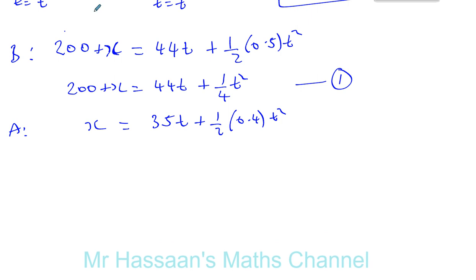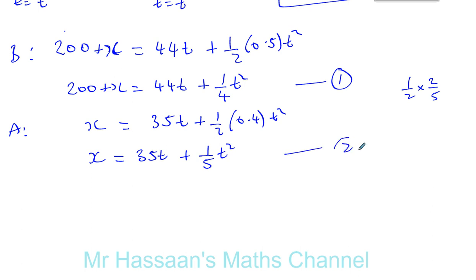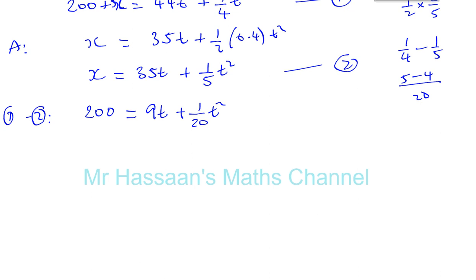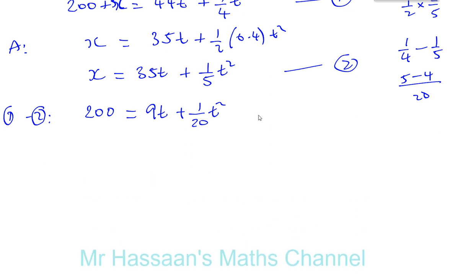Solving simultaneously: subtract equation 2 from equation 1 to eliminate X. We get 200 = 44T − 35T + ¼T² − ⅕T², which gives 200 = 9T + (1/20)T². Multiplying both sides by 20 to clear fractions: 4000 = 180T + T². Rearranging: T² + 180T − 4000 = 0. We end up with a quadratic equation we can solve to find T.